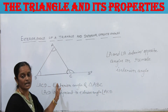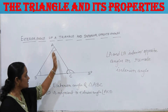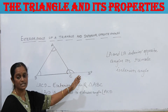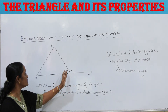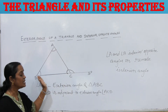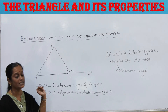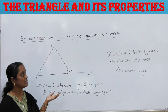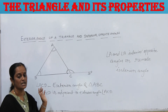If you produce one of the sides BC to a point D, an exterior angle ACD is formed in triangle ABC. The angle adjacent to this exterior angle is angle ACB, and the other two angles — angle A and angle B — are called interior opposite angles or remote interior angles.